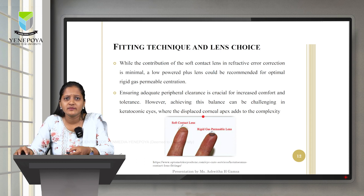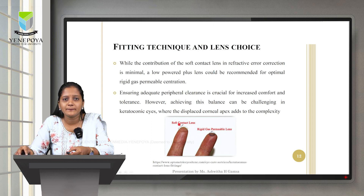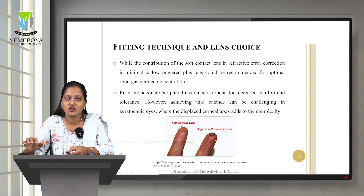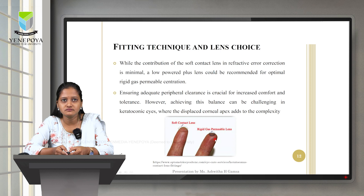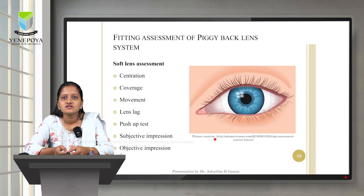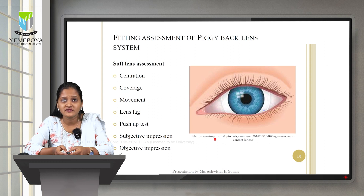Here is an image showing how a basic soft contact lens and RGP look. Soft contact lenses are comparatively larger in diameter, while RGP lenses are comparatively smaller. The fitting assessment of a piggyback lens system is done separately for soft and RGP — soft contact lens assessment is always done first, then the RGP.